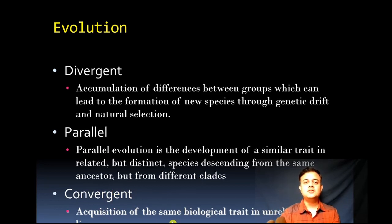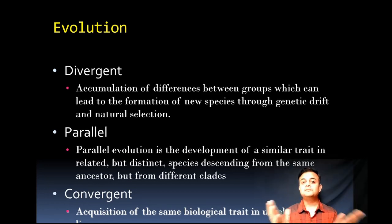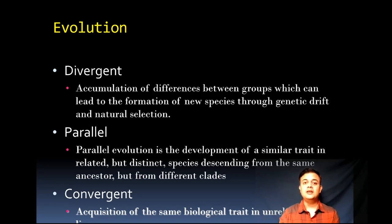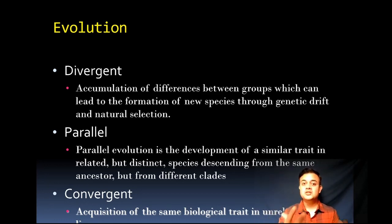In convergent evolution, lineages could be totally unrelated but still appear morphologically similar, and functional similarity might also be there. One good example is wings of butterflies and wings of birds. Bat wings and bird wings are also totally unrelated phylogenetically, but still look and function quite similarly. However, if you look at the deep anatomy of these structures, they are totally different — this is convergent evolution.